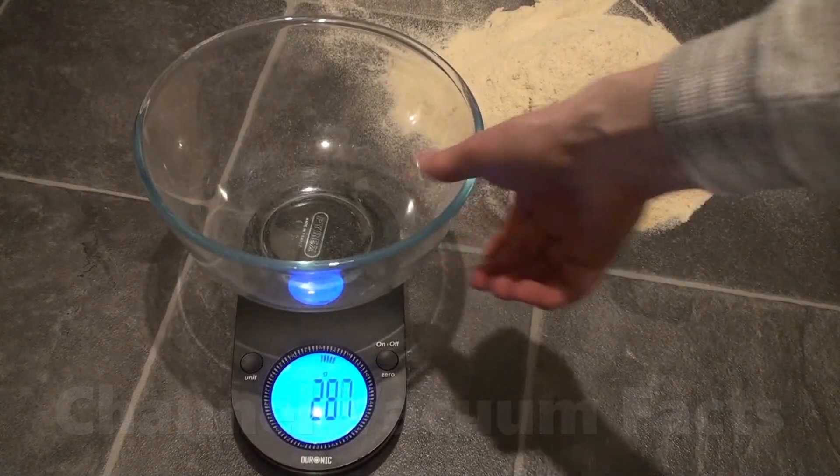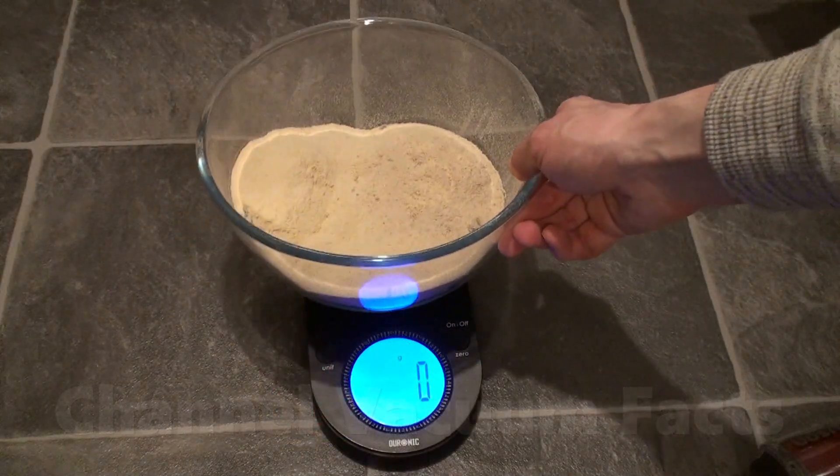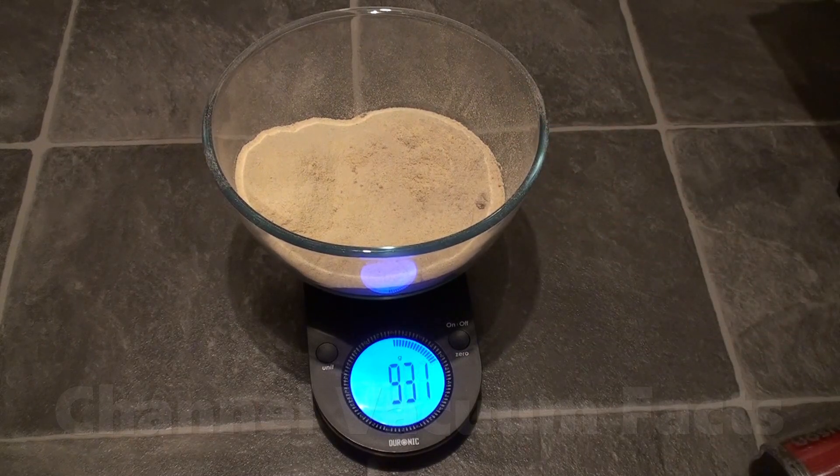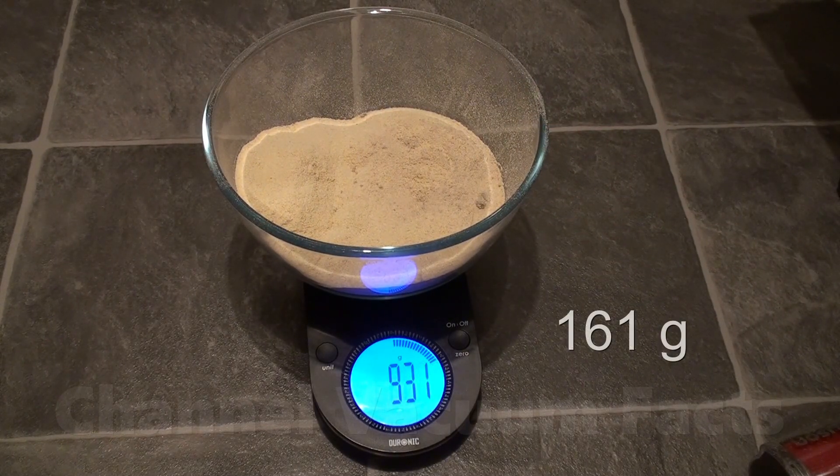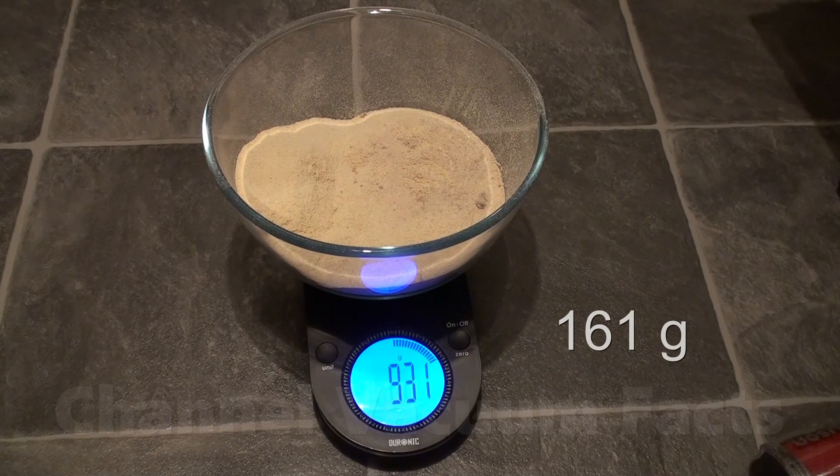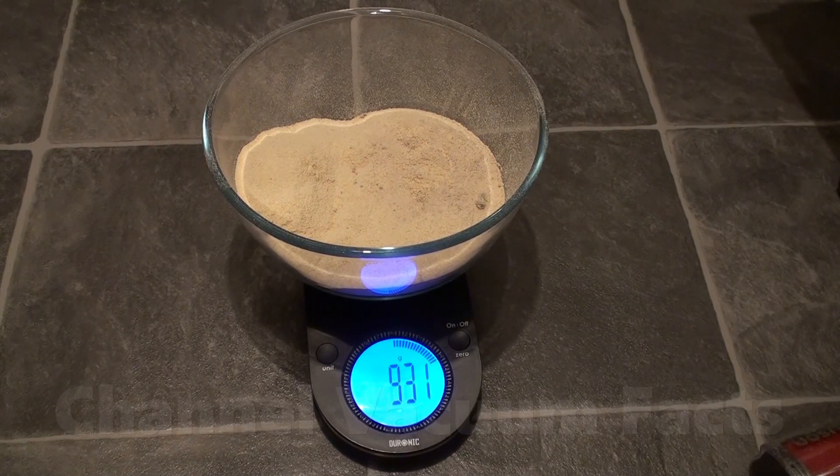The weight of the empty bowl was 770 grams, which increased to 931 grams with the dust, meaning the weight of the dust collected in the first pass was 161 grams. This is of course most of the dust, but what was left behind?